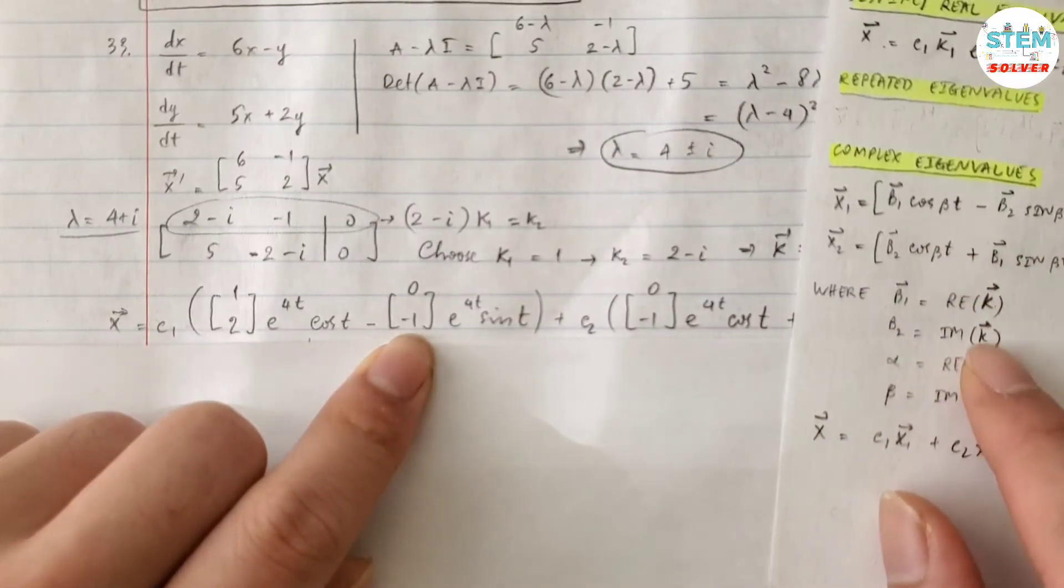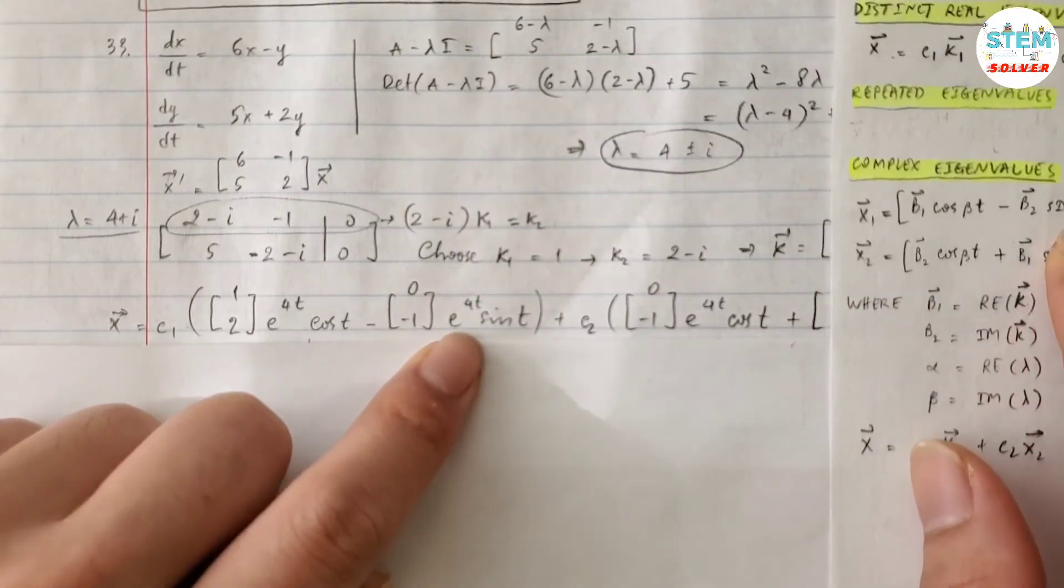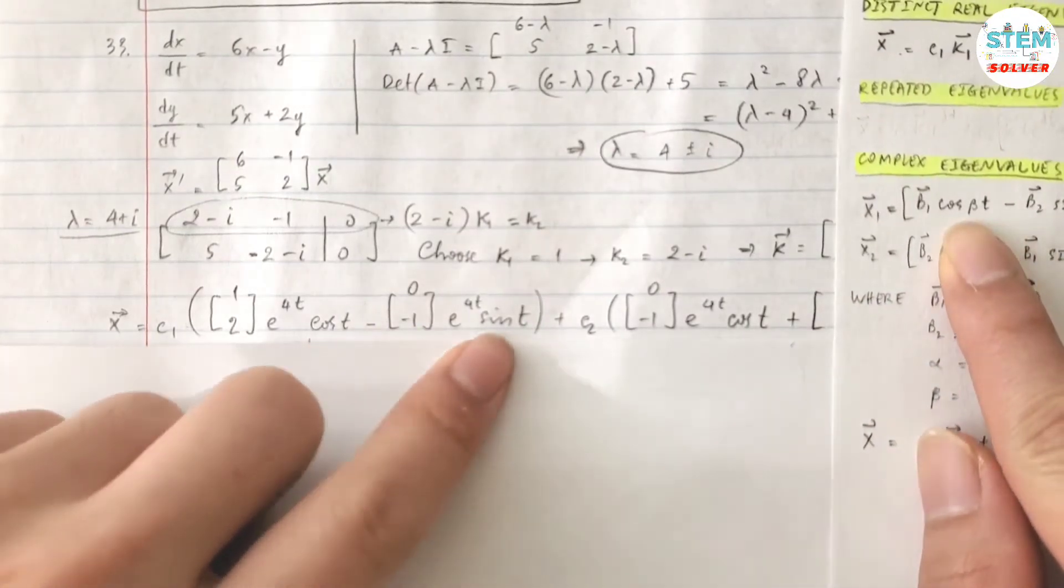b2 is imaginary part of λ, which is [0, -1], e^(4t), times βt, so sin(t), okay?